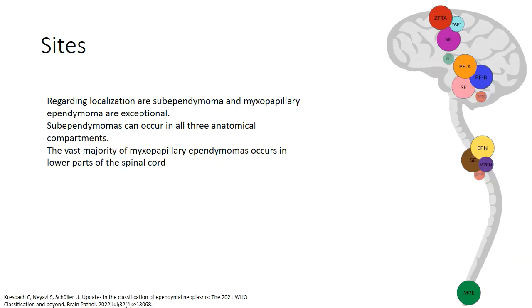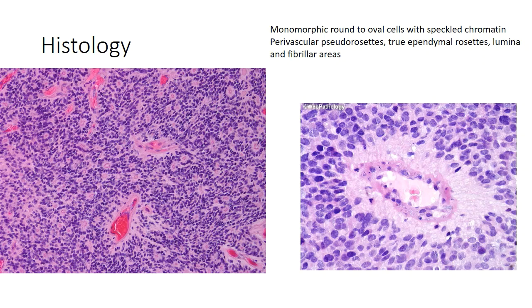Ependymomas typically occur in supratentorial, posterior fossa, or spinal locations. Subependymoma can occur in all three compartments. The vast majority of myxopapillary ependymoma occurs in the lower part of the spinal cord involving the cauda equina. Histologically, ependymomas show a monomorphous population of tumor cells, usually round-to-ovoid with speckled chromatin, characteristic perivascular distribution, and presence of ependymal rosettes with a characteristic lumen surrounded by tumor cells.